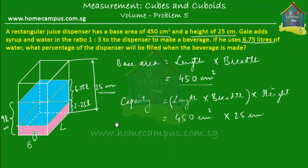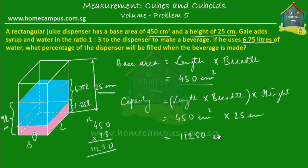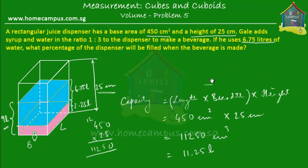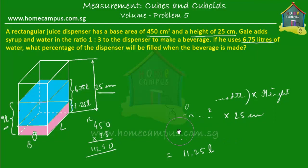450 times 25: I put the zero here, then 25 times 5 is 125 — so 5 and 12 carried over; 25 times 4 is 100 plus 12 is 112. So this is 11,250 cubic centimetres, which is equal to 11.25 litres. So the capacity of the juice dispenser is 11.25 litres.